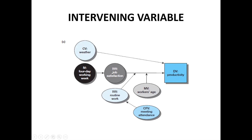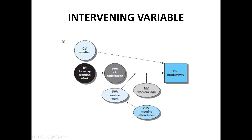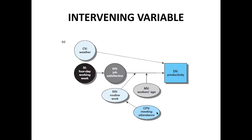The variables mentioned with regard to causal relationships are concrete and clearly measurable — they can be seen, counted, and observed in some way. However, one may not be completely satisfied by the explanation they give. While we may recognize that the four-day working week (the independent variable) results in higher productivity, we might think this is not the whole story. The working week length affects an intervening variable — job satisfaction — which in turn affects productivity. The more reduced the working week, the more job satisfaction, and the more job satisfaction, the more productivity. If there is a variable in this relationship that enhances the relationship and is the reason why that relationship exists, it is called the intervening variable.